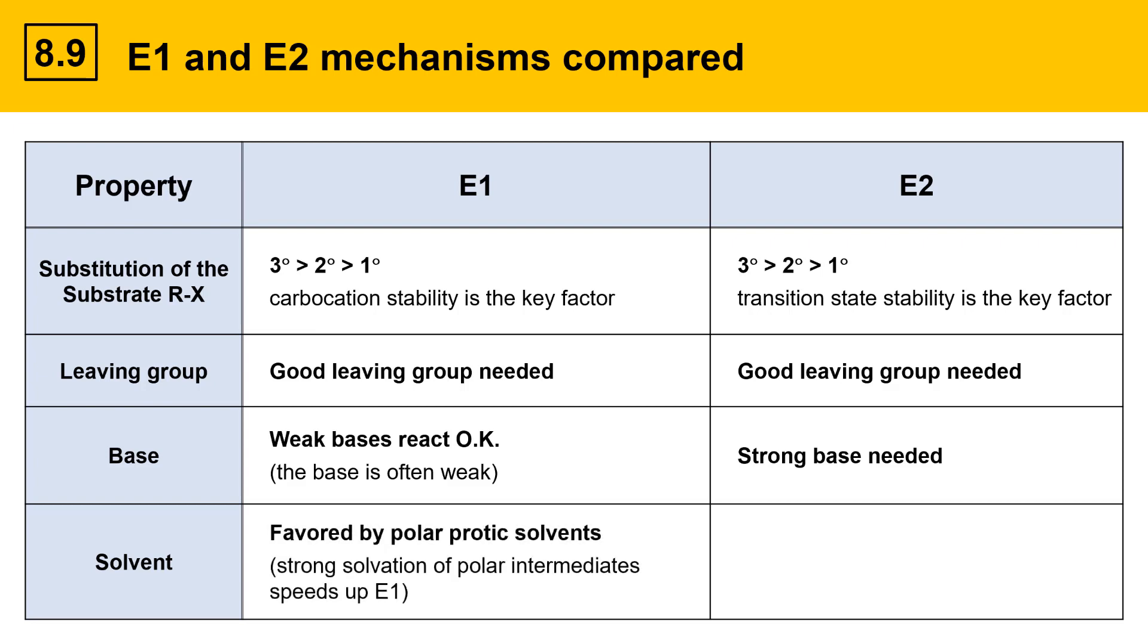For solvent, E1 reactions are favored by polar protic solvents. Here, the reason is strong solvation of the polar intermediates, the carbocation, speeds up the E1 reaction. In E2, though, these reactions are favored by polar aprotic solvents. Strong solvation of the base slows down the E2 reaction, the reason being that the base is less reactive when it's strongly solvated.